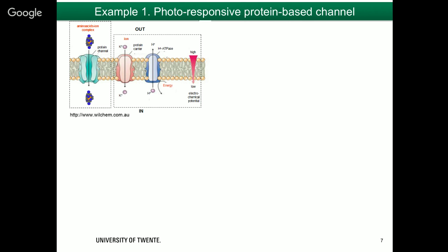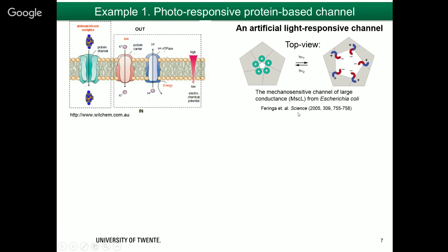The first detailed example is a photoresponsive protein-based channel. A channel protein allows the transport of specific substances across cell membranes and plays very important roles in cell regulation. The group of Ben Feringa at the University of Groningen published this work 10 years ago in Science. They took the mechanosensitive channel of large conductance, MscL, from E. coli, which is naturally not light-responsive, and attached spiropyran to it.